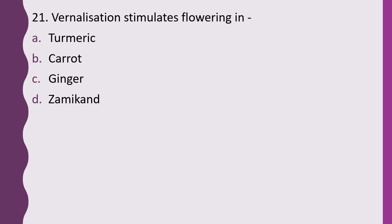Question 21. Vernalization stimulates flowering in: turmeric, carrot, ginger, or zamikand. The correct answer is option B, carrot.